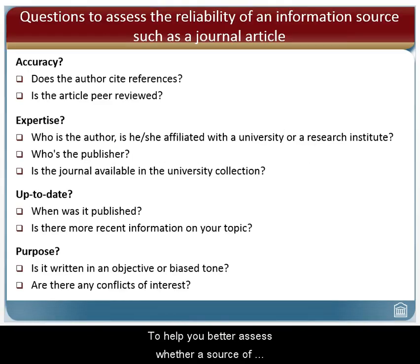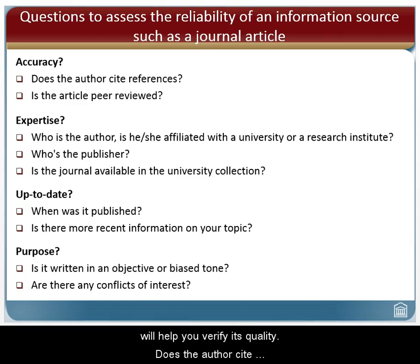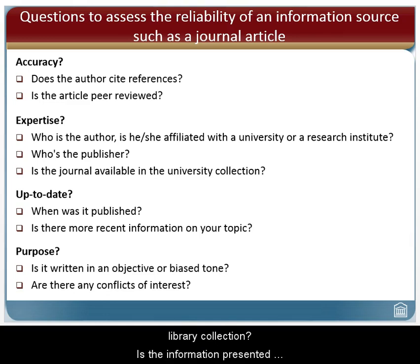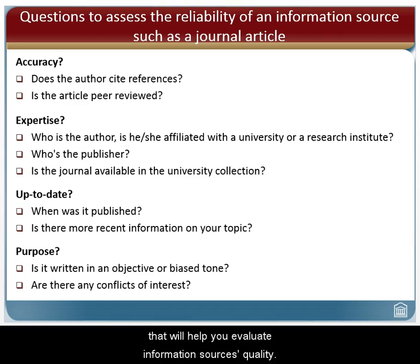To help you better assess whether a source of information is reliable, here's a list of questions that will help you verify its quality: Does the author cite references? Who is the author? Is he or she affiliated with a university or research institute? Is the journal available in the library collection? Is the information presented current and up-to-date? Is the information presented objective or biased? This is a sample of questions that will help you evaluate information sources' quality.